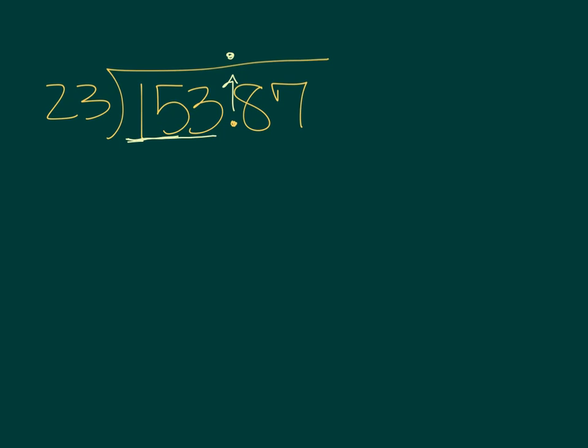So I'm going to use my estimation trick. I know that 23 is about 20. 153 is about 150. So I'm going to think of this like 150 divided by 20 or 15 divided by 2. I know that 2 goes into 15 seven times, so I'll try that with my original number first.